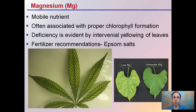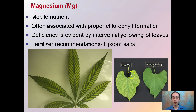Magnesium is a mobile nutrient often associated with proper chlorophyll formation. Deficiency is evident by interveinal yellowing of the leaves, as you can see here. Fertilizer recommendations include Epsom salts. This is a good comparison — between adequate magnesium and low magnesium — the veins maintain their green color while in between them we start to get that yellowing that develops. This is characteristic of magnesium deficiency.